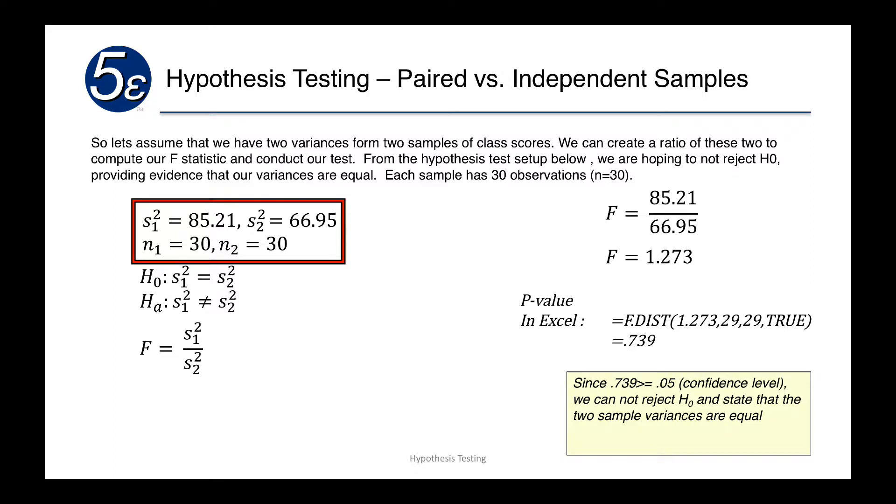We set up our null hypothesis that the two variances are equal to each other. Our alternative hypothesis is that they're not equal to each other. So we calculate our F-statistic as a simple ratio or fraction: 85.21 divided by 66.95. And our F-statistic is 1.273.